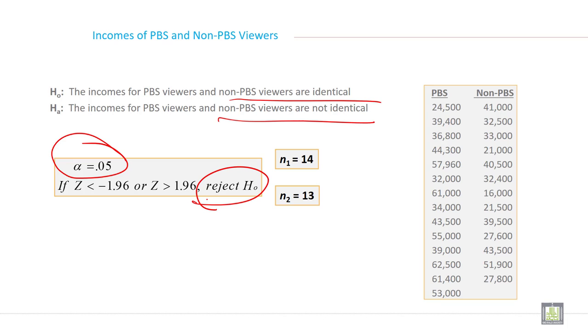This is the decision rule and here it is given n1 is equal to 14 and n2 is equal to 13, and the data is given for PBS viewers and for non-PBS viewers.